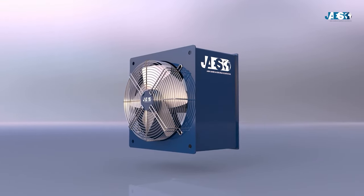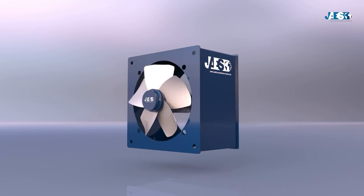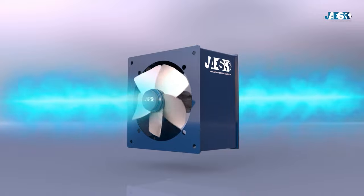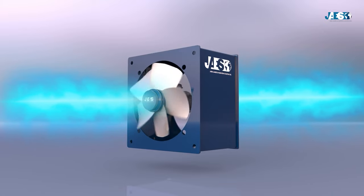In an axial impeller, if the blades spin clockwise, the direction of the flow will be forward. Whereas, if they spin counterclockwise, the flow will reverse its direction.